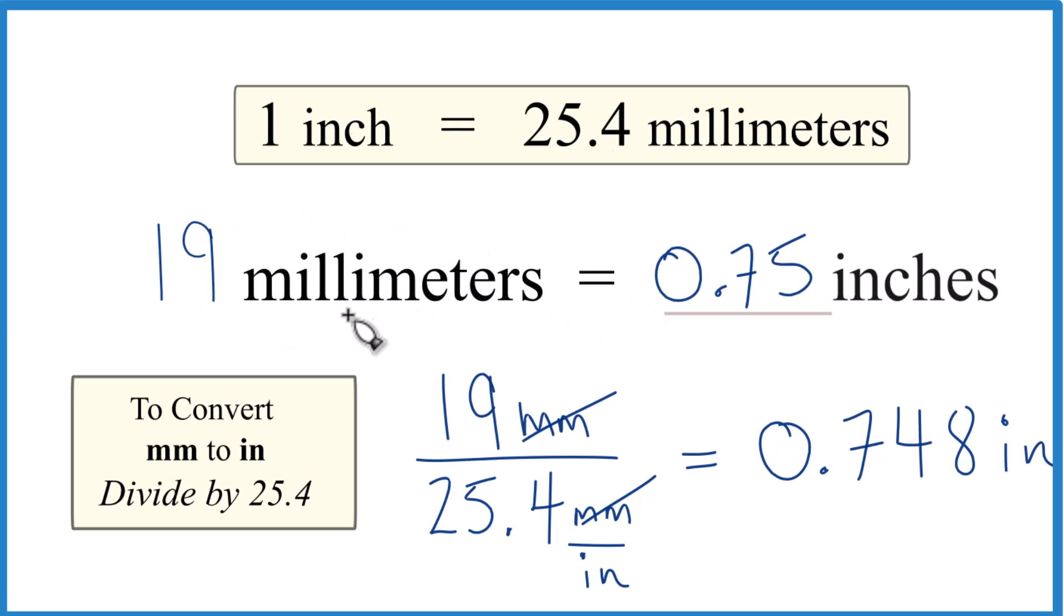When we take 19 millimeters, change it to inches, we get 0.75 inches, or you could call this three fourths of an inch or three quarters of an inch. It's Dr. B and thanks for watching.